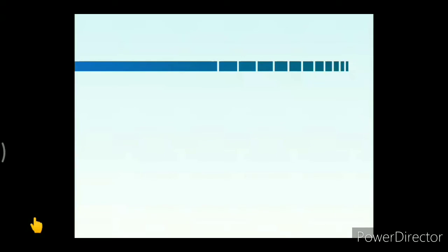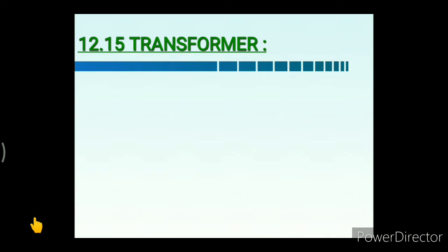The next and last topic is the transformer. Domestic and industrial electric power supply is mostly alternating. This alternating voltage is generated at hydroelectric, thermal, and nuclear power stations and transmitted to substations and then to users. The value of alternating voltages must change from high to low at various stages, which is done using a device called a transformer.